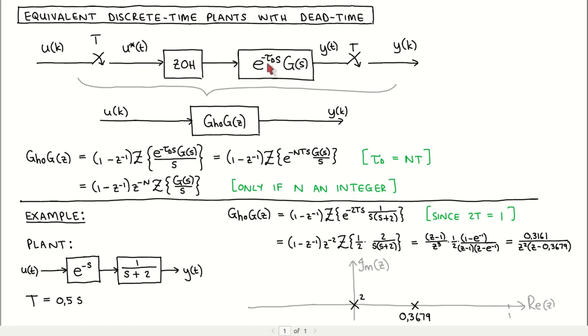Similar to the general case we looked at previously, the plant is preceded by a zero order hold circuit and the discrete time signal u of k is converted to the impulse train formulation before it is applied to the input of the zero order hold. The plant output is sampled to produce the discrete time plant output y of k.